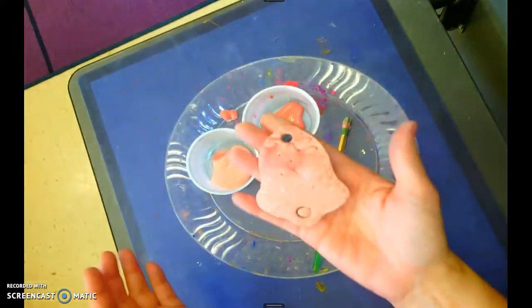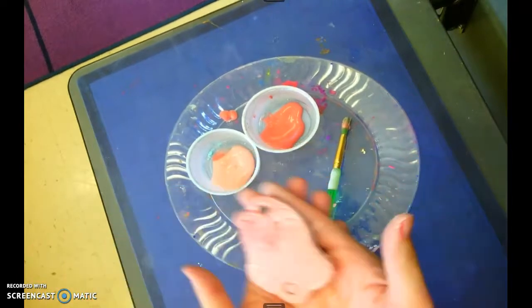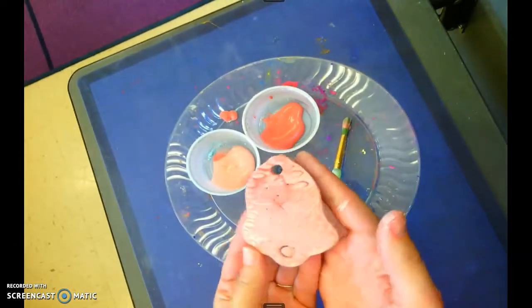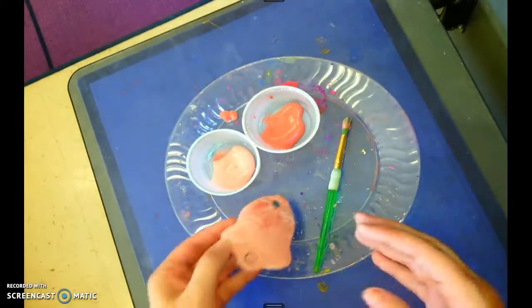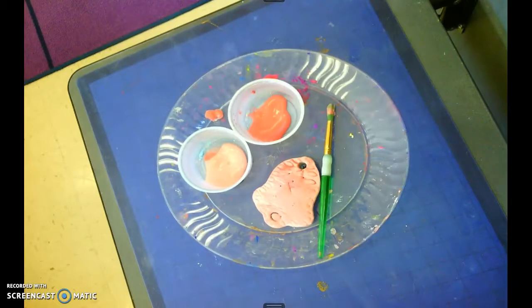And then whenever you're done, this is what it's going to look like, depending on what colors you chose. When you're done, you're going to bring it to me. I'm going to put it on the drying rack. You're going to get a wipe. You're going to clean your hands. And you're going to go to carpet and read a book until it's time to go. Okay, have fun.